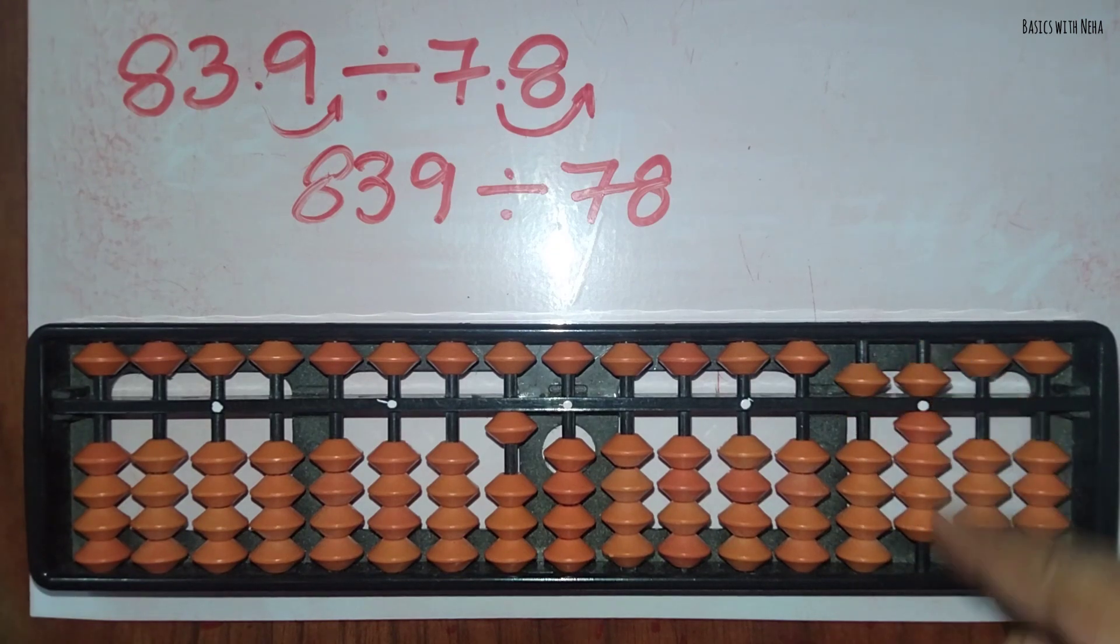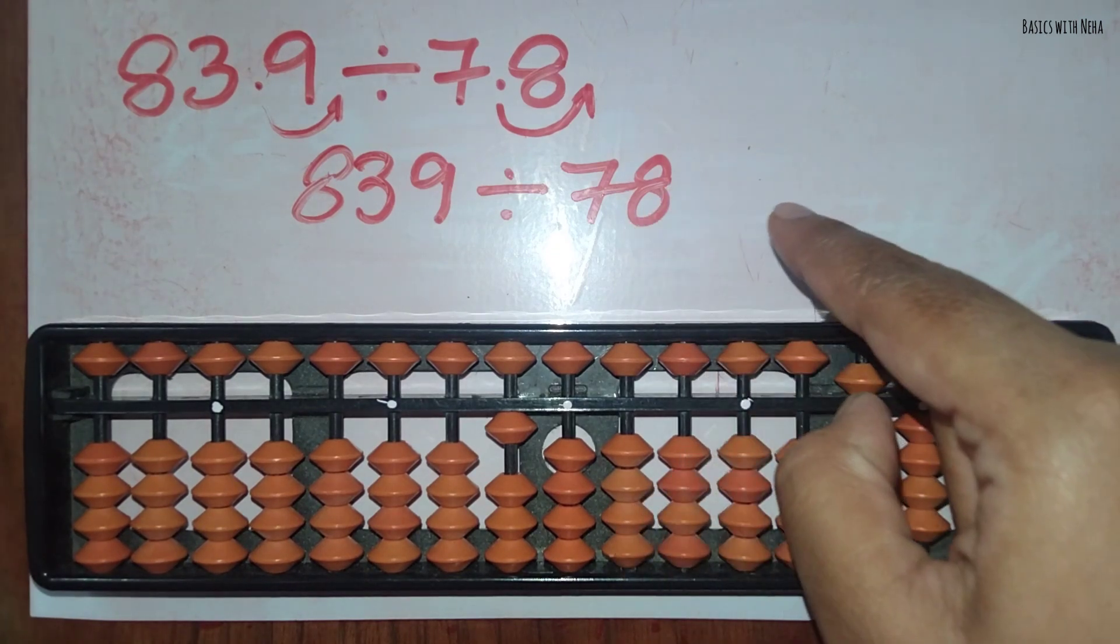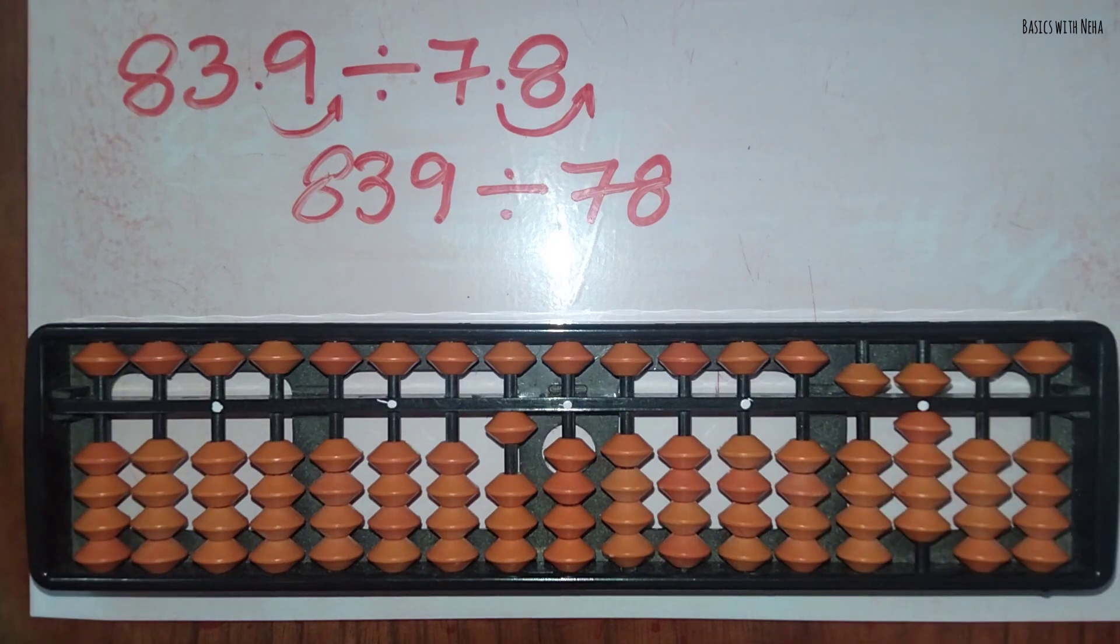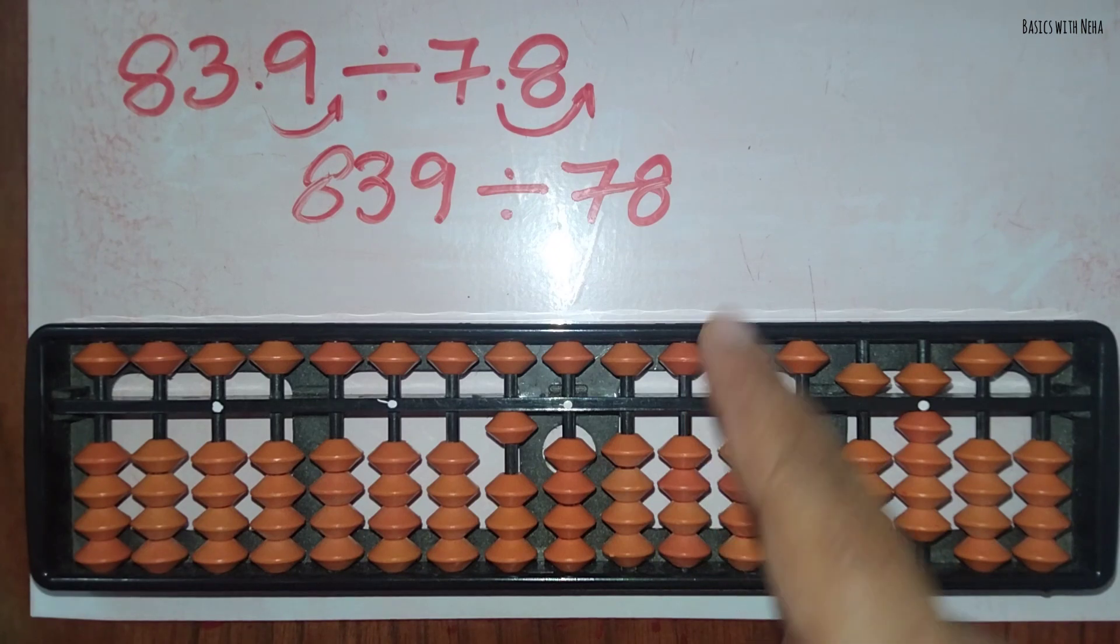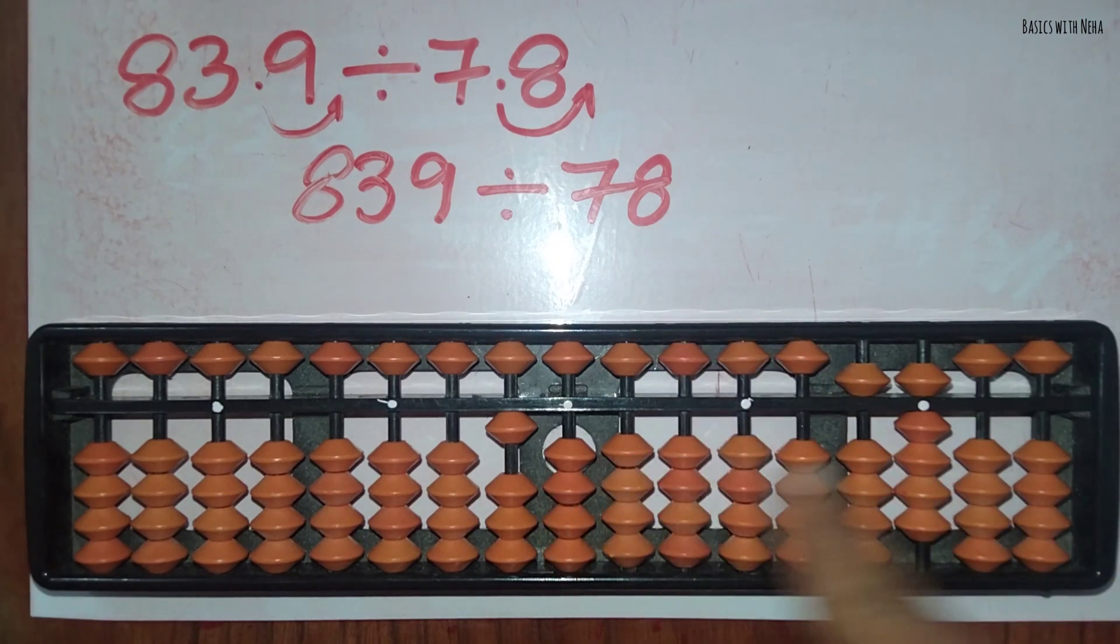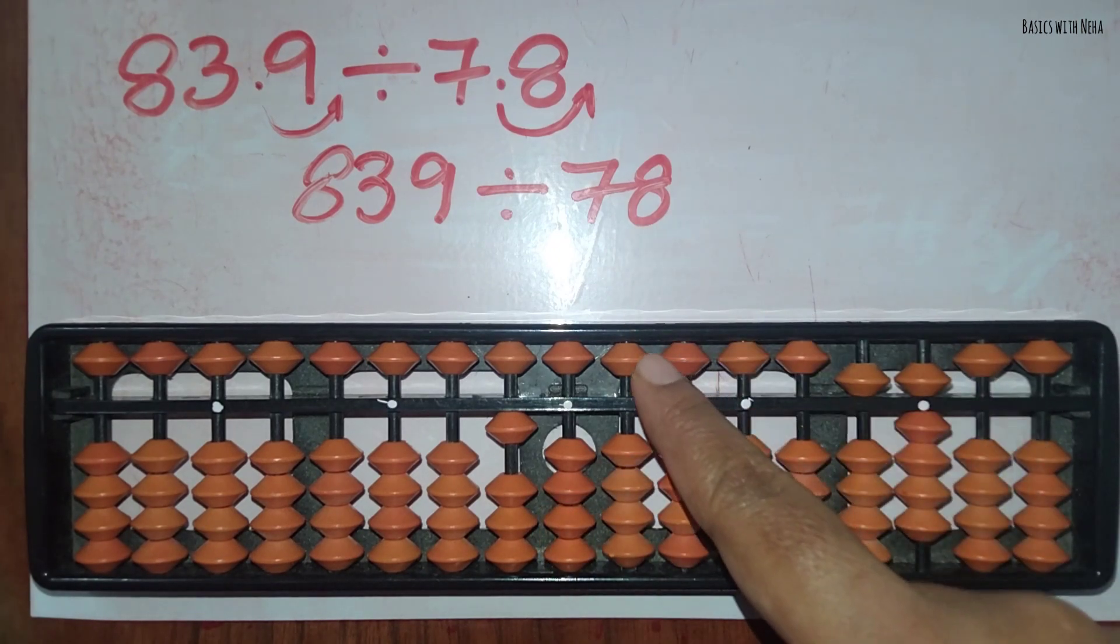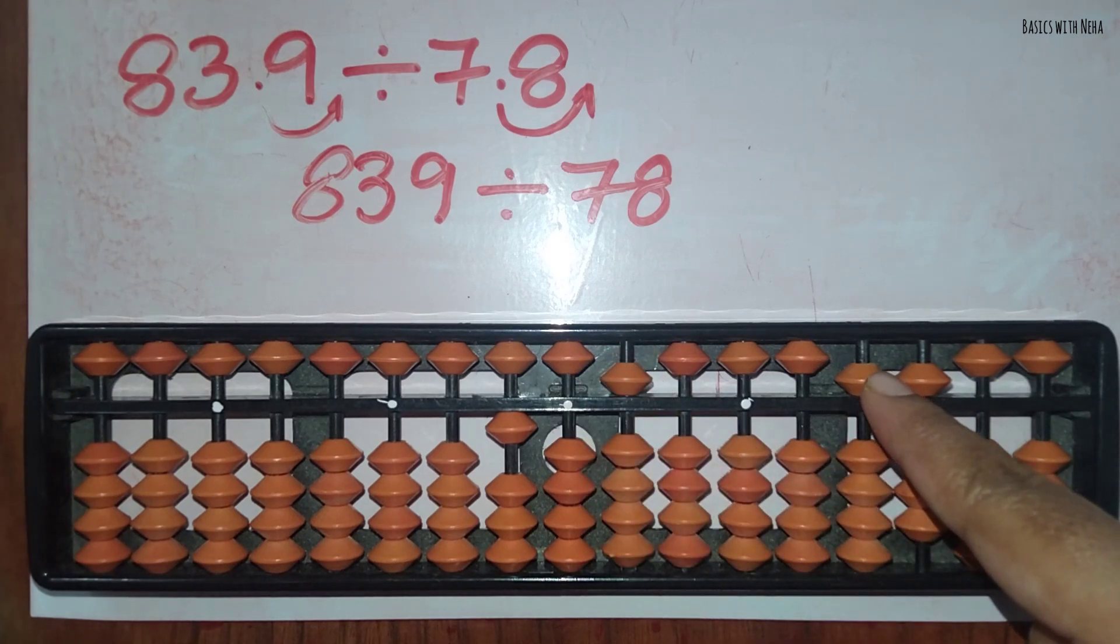So 78 into 590... 78 fives are 390, so we can take five. Fives are 390.